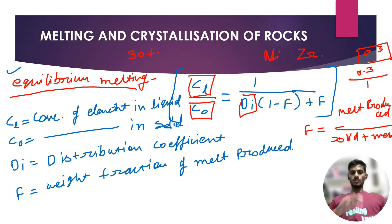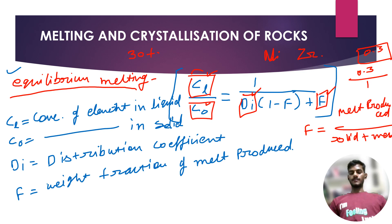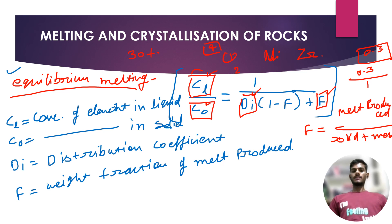Numericals are created by giving either CL or CO and asking for the other. The distribution coefficient will be given and the fractional value may also be given — any three of the four variables may be given, and they will ask you about the fourth one. In CSIR NET, these questions are asked on a four-marks basis; in GATE, this question is frequently asked on one mark as a straightforward, easy calculation, or on two marks if a little bit complicated.